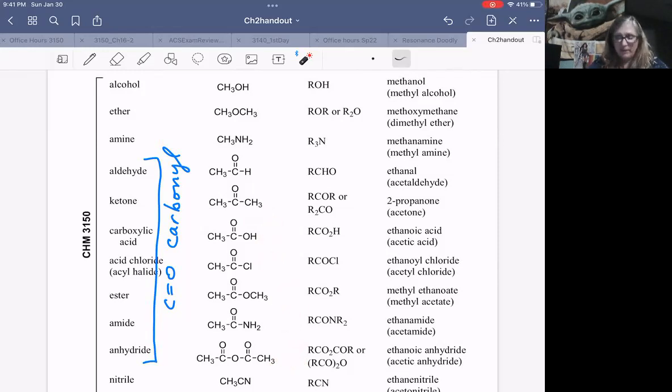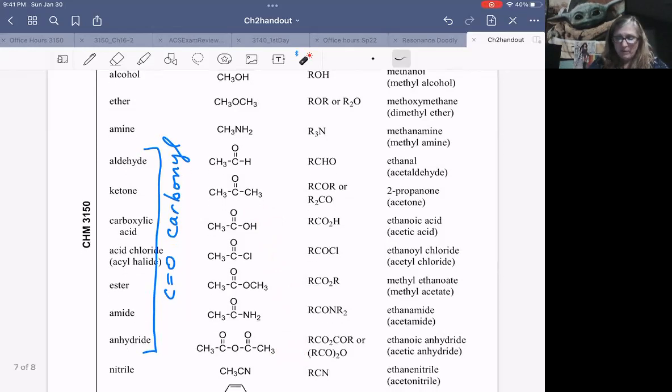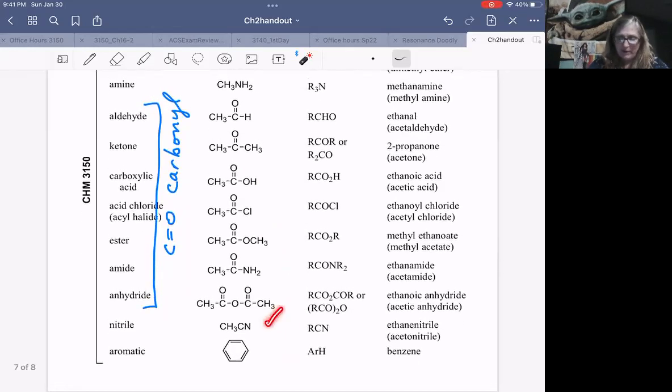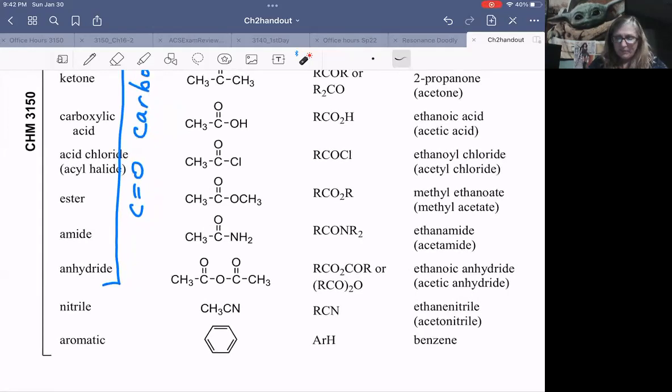When you have something other than carbon or hydrogen, we have all sorts of varieties here. We have a carboxylic acid, acid chloride, ester, amide, and anhydride. They're called carboxylic acid derivatives. We'll learn about nitriles. And then this last guy, we said how special benzene is, the special resonance that benzene has. It's actually characteristic of an entire class of compounds, a functional group called being aromatic.